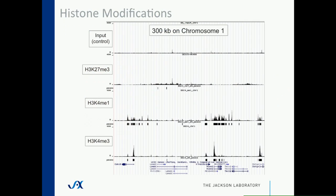If you look at these histone modifications once you align them to the genome, you see tracks like this. The first level is our input control with no IP, showing background peaks. You can then compare that to peaks from H3K4 trimethyl, H3K4 monomethyl, and H3K27 trimethyl marks. These map clearly across the genome and you can call peaks easily for the K4 marks. For the K27 marks, the peaks are lower and broader, and the peak calling algorithm doesn't do a great job — that's a caveat for all the K27 trimethyl data.